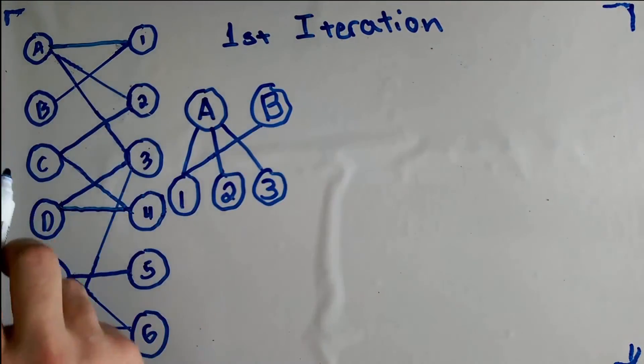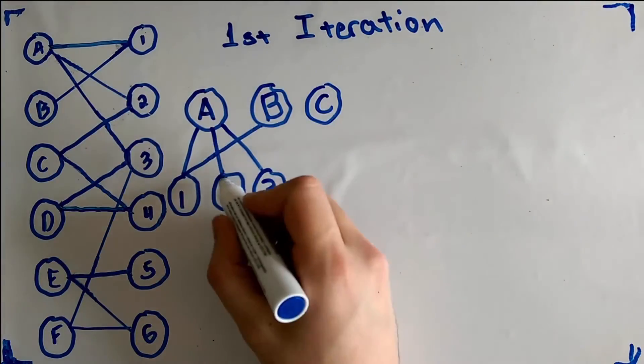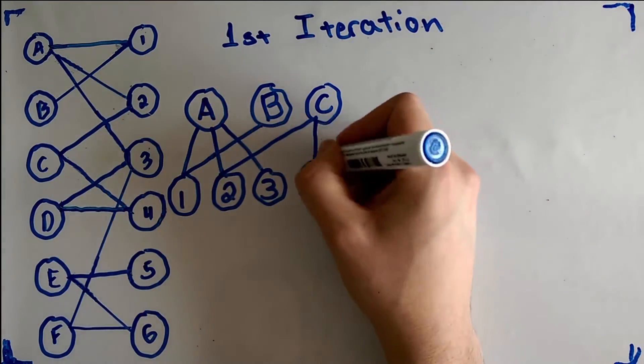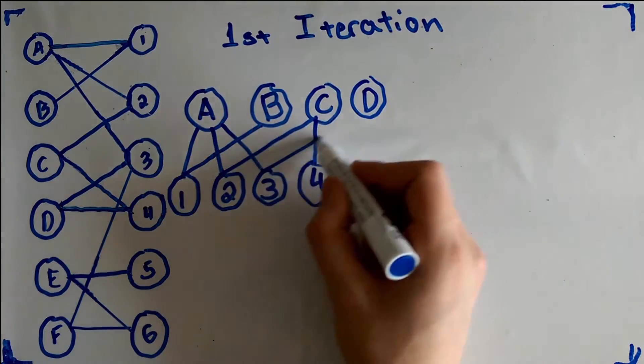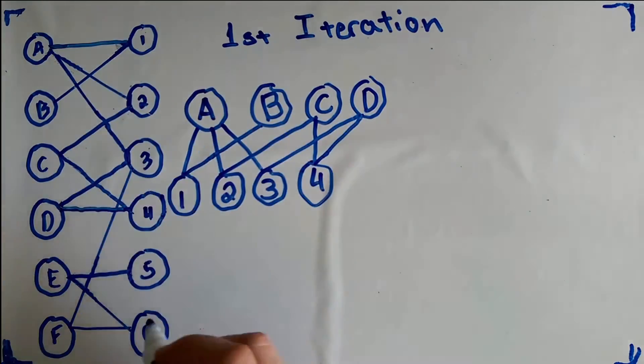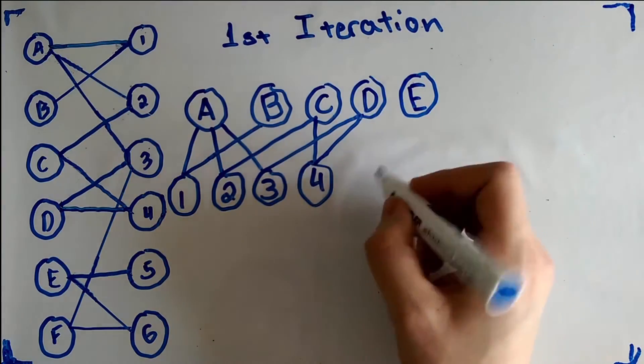B is only connected to 1. C is connected to 2 and 4 and so on and so forth. Once we've reached an unmatched vertex in the right hand side set, we can stop our breadth first search at this level.